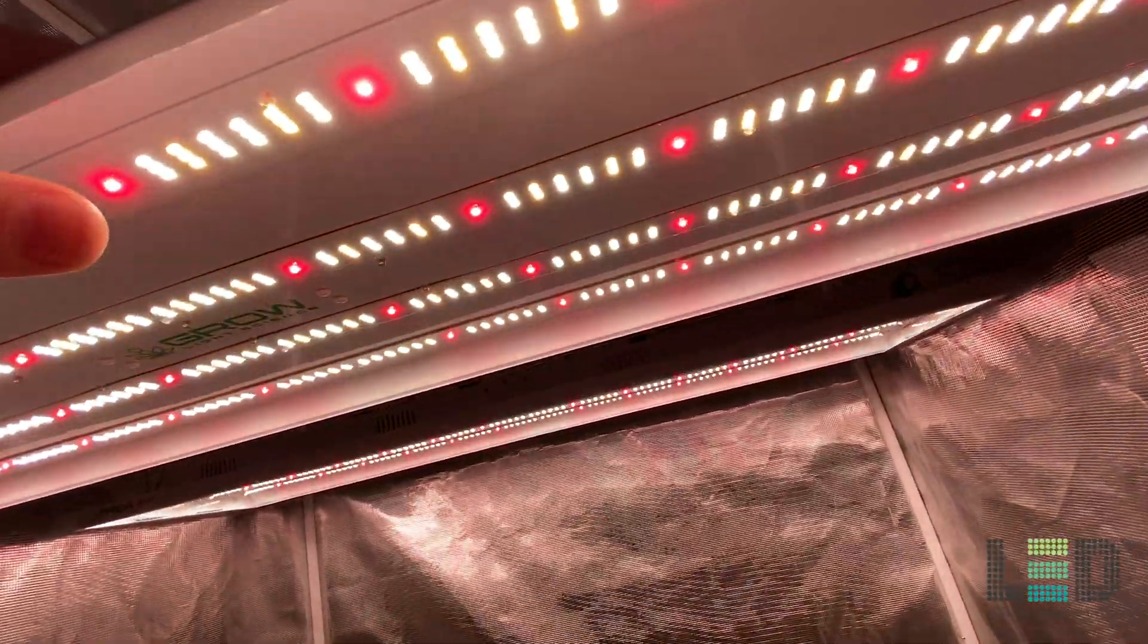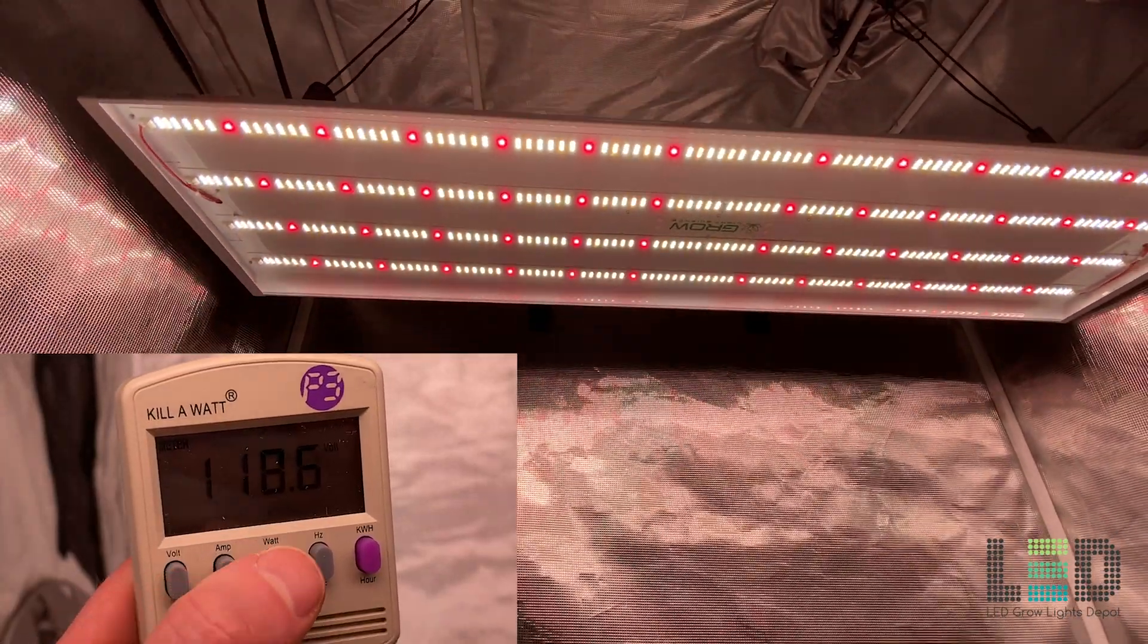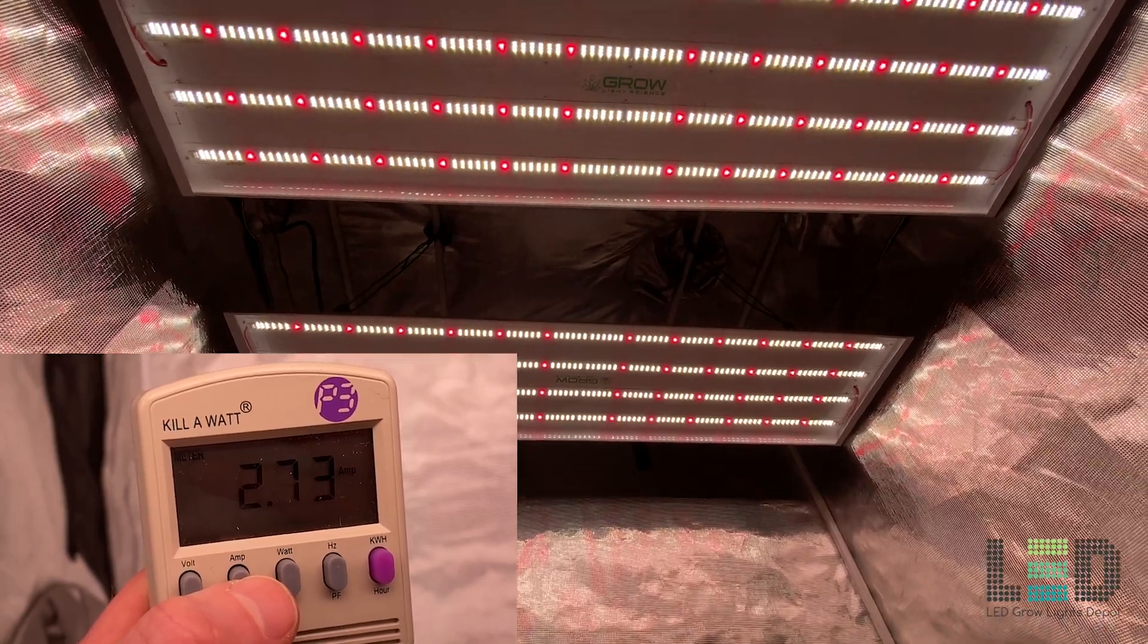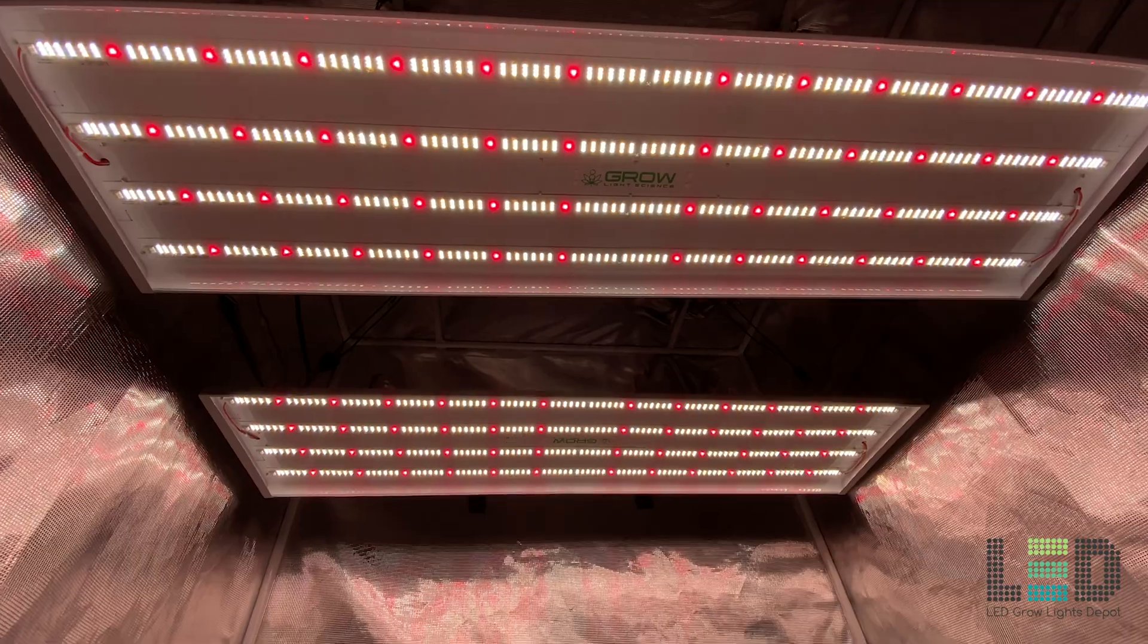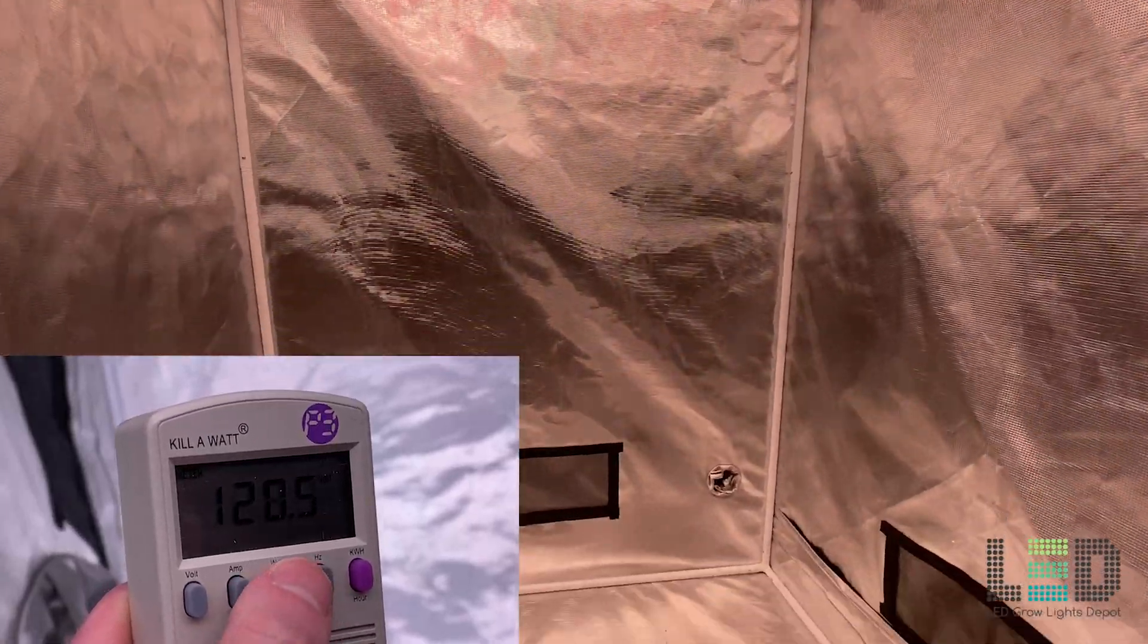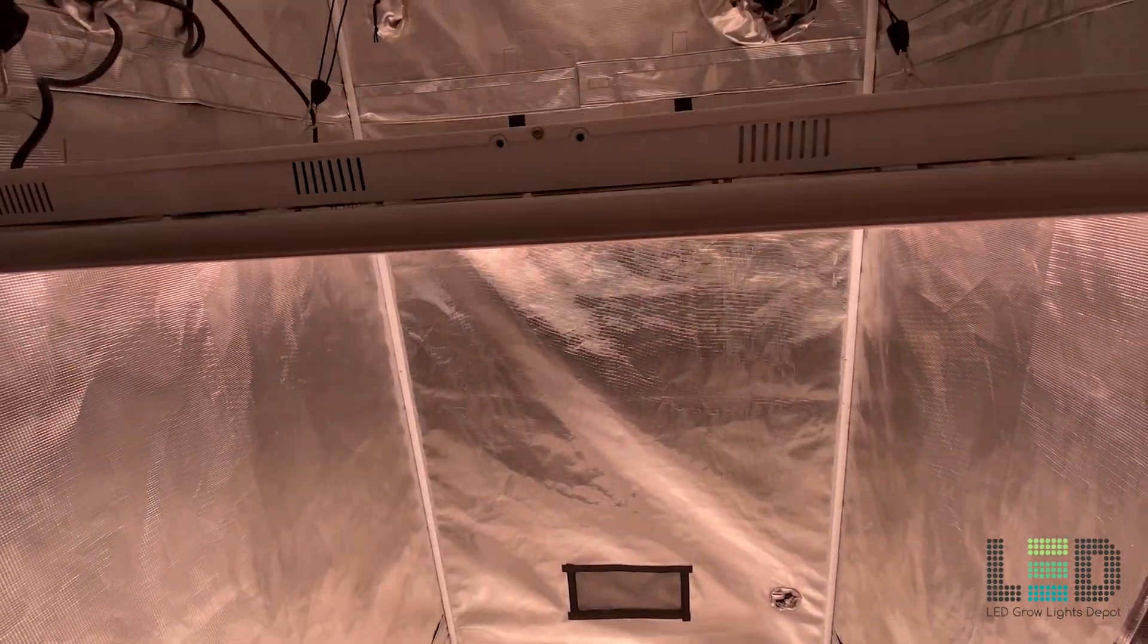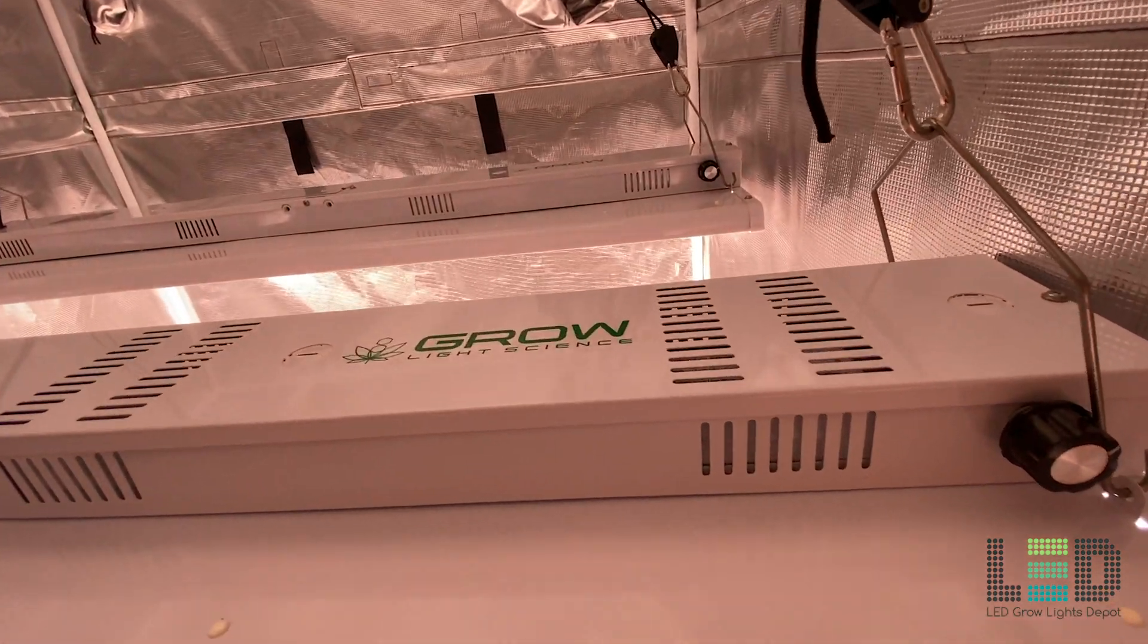I measured the wattage draw at the wall with a kilowatt meter. At 118 volts, I received a reading of 322 watts with an amperage of 2.73. Expect an amperage of 1.37 at around 240 volts. Dimmed all the way down to 10%, the fixture drew 26.9 watts and 0.5 amps. The Grow 300 is rated for 120 volt and 240 volt applications.